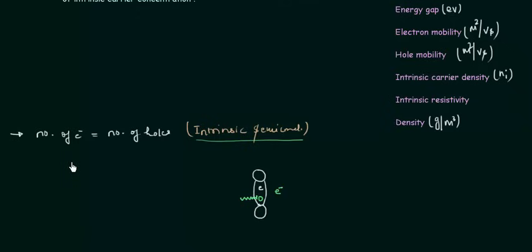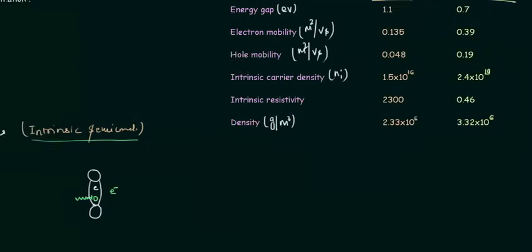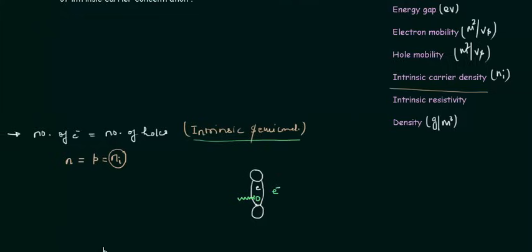If I represent the concentration of electrons by N and concentration of holes by P — I am representing the concentration of holes by P not H because the movement of a hole is the same as the movement of positive charge with a charge equal to the electron and mass greater than the electron — in case of intrinsic semiconductor they are the same. The concentration of electron and the concentration of hole is the same, and I represent them collectively as NI where I stands for intrinsic semiconductor. We call this NI the intrinsic carrier density, which is 1.5 × 10^16 for silicon and 2.4 × 10^19 for germanium.